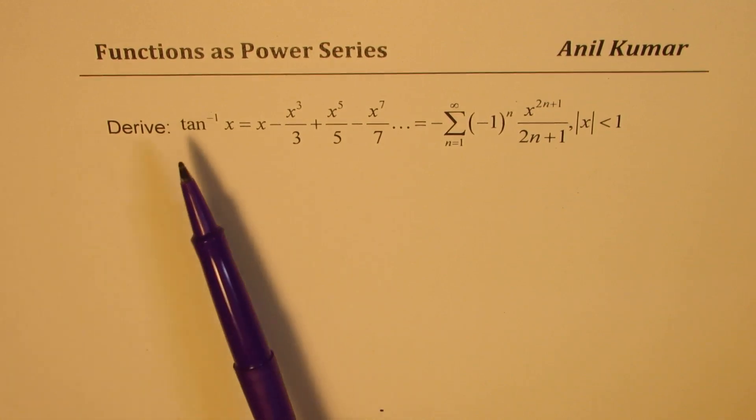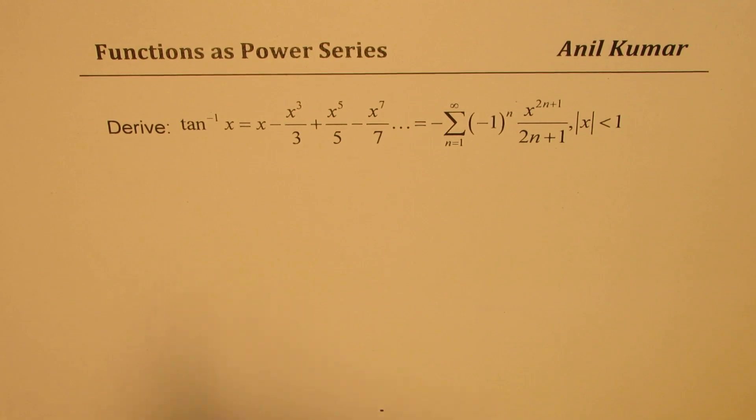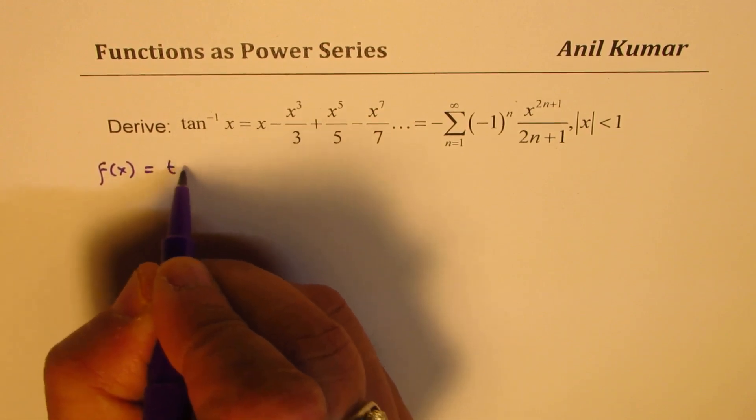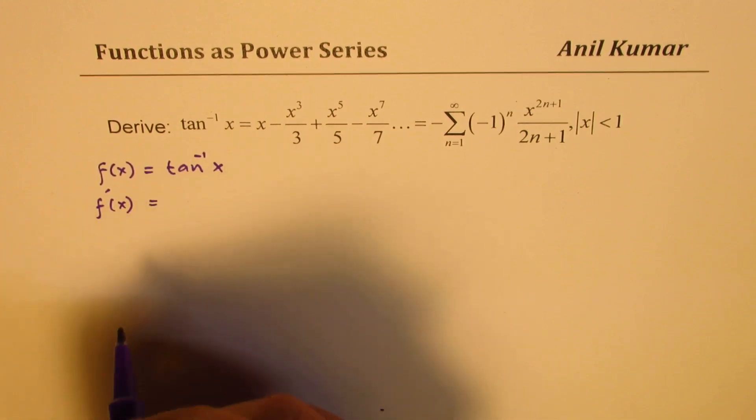Since we need to work on the function tan inverse x, you will recall that if I have a function which is tan inverse x, then the derivative of this function is one over one plus x squared.